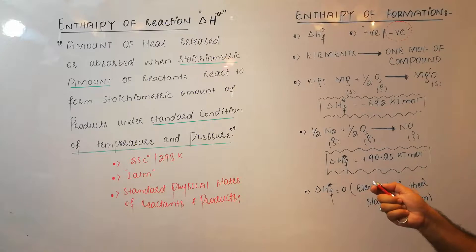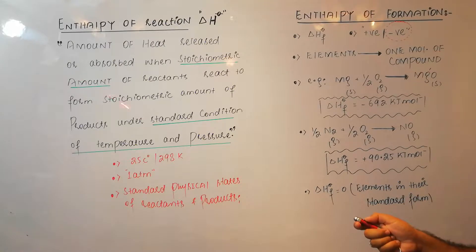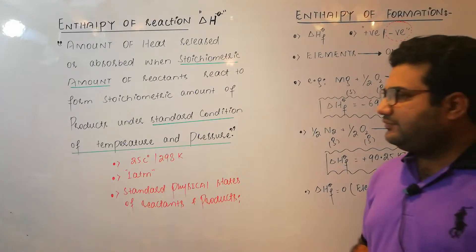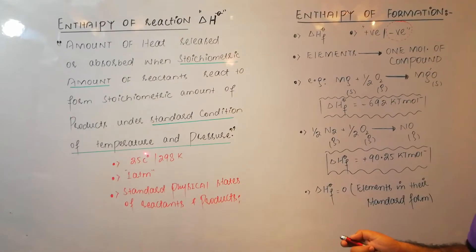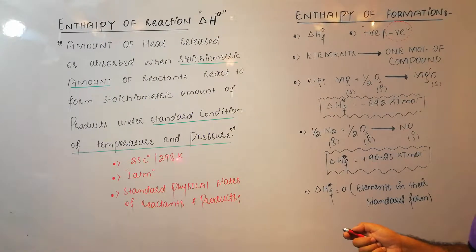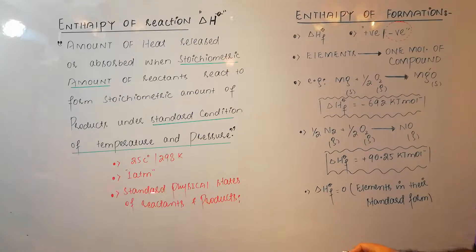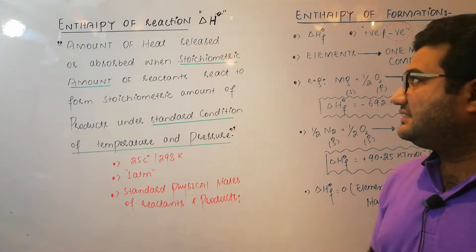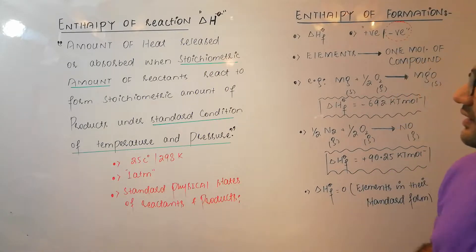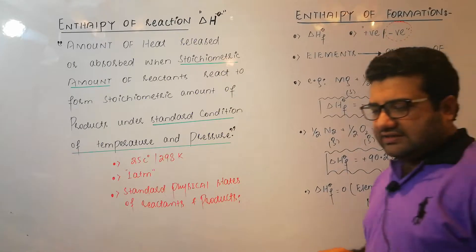In this definition there are two parts which are very important: one is the stoichiometric amount, and the second is the standard conditions of temperature and pressure. Standard conditions are 25 degrees C or 298 Kelvin, 1 atm pressure, and all the reactants and products must be present in their standard physical states. The first example of enthalpy of reaction is the enthalpy of formation.